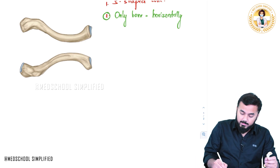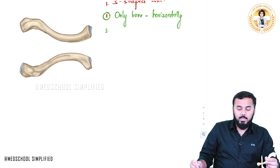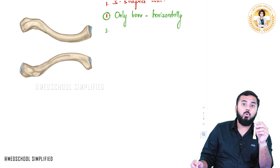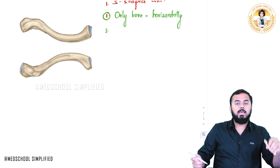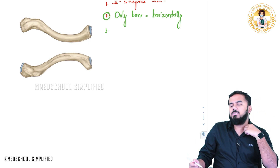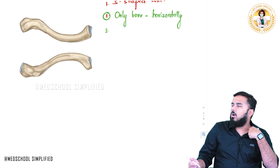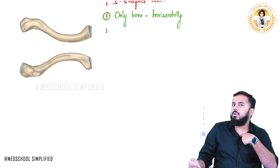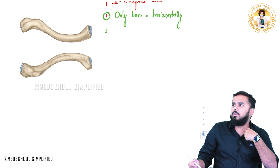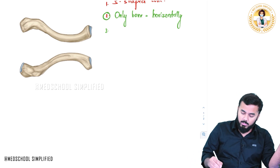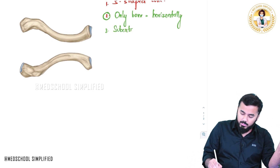The third important peculiarity is that this is the only bone which is subcutaneous throughout — along its entire length it is subcutaneous, meaning it is just beneath the skin. If you touch it all the way from the sternal end to the acromial end, you can feel the bone because it is subcutaneous throughout.